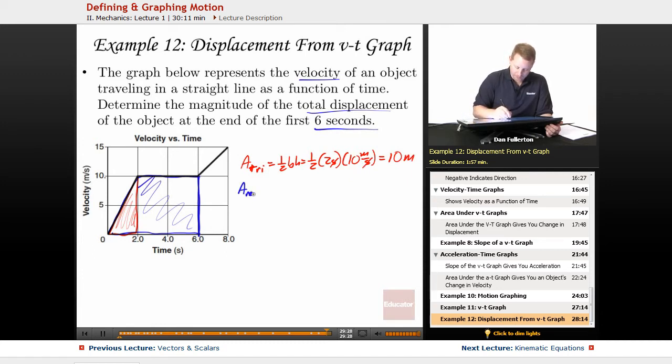And the area of our rectangle, length times width, or from 2 to 6 seconds, is 4 seconds, times its height, 10 meters per second. Seconds over seconds cancel out, 40 meters.